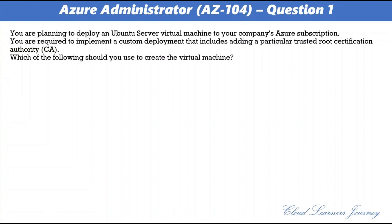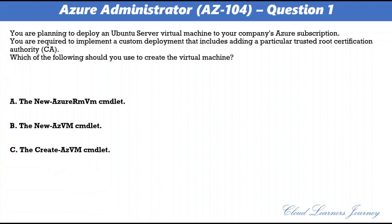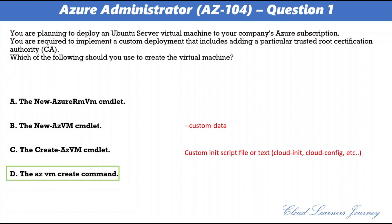Question 1. You are planning to deploy an Ubuntu server virtual machine to your company's Azure subscription. You are required to implement a custom deployment that includes adding a particular trusted root certification authority. Which of the following should you use to create the virtual machine? Options: A. The New-AzureRMVM cmdlet, B. The New-AzVM cmdlet, C. The Create-AzVM cmdlet, D. The az vm create command. The correct option is D. You should use the az vm create command with the --custom-data parameter to pass in your cloud-init config file. Ensure that the full path to the cloud.init file is used if the file is not located in the working directory.